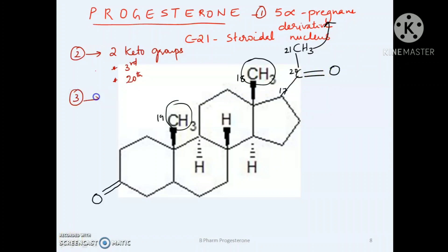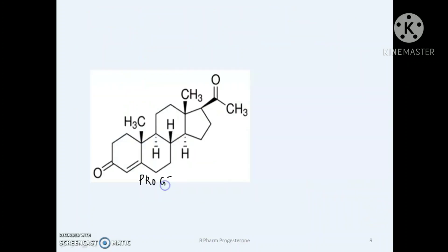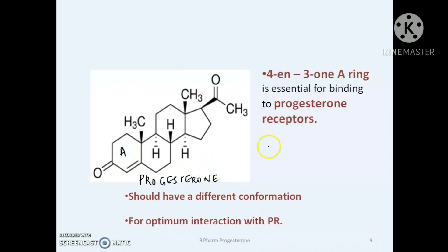The third structural feature of progesterone is that it contains an unsaturation or a double bond at the fourth position. So the IUPAC name of progesterone is pregn-4-ene-3,20-dione. The A-ring with an unsaturation at C4 and a 3-keto group is essential for binding to the progesterone receptors.